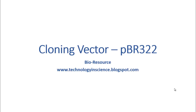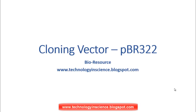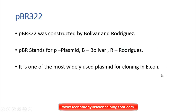Hello all, today we will discuss about cloning vector PBR322. PBR322 was constructed by Bolivar and Rodriguez and they named it after their discovery. PBR stands for plasmid, B for Bolivar and R for Rodriguez. PBR322 is one of the most widely used plasmids for cloning in E. coli.